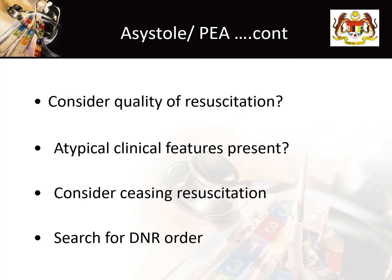If the patient has persistent asystole or PEA despite medications and ongoing CPR, assess the quality of resuscitation — ensure high-quality chest compression at rate 100 to 120 and depth 5 to 6 cm, minimize interruptions, allow full chest recoil, avoid hyperventilation, and rotate the chest compressor every 2 minutes. Look for atypical clinical features suggesting reversible causes such as tension pneumothorax or PE. Consider stopping resuscitation if there are no positive results with persistent asystole, if the patient arrested for a prolonged time, and look for a DNR order from family or previous notes.